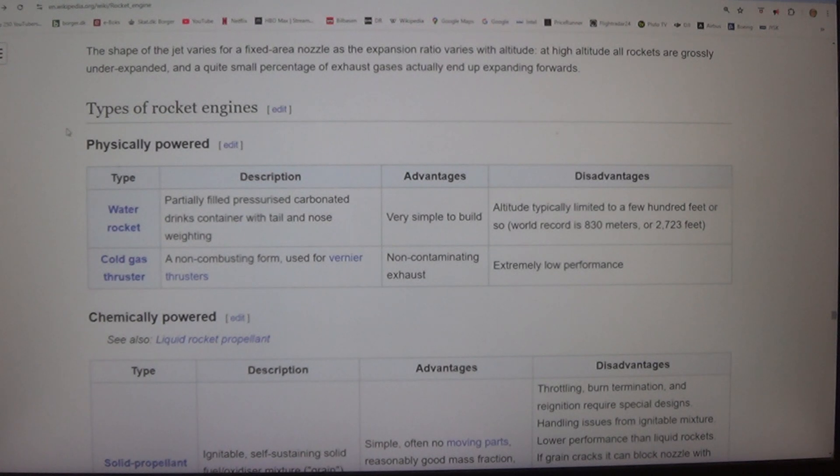Cold gas thruster - in non-combusting form, used for vernier thrusters. Non-contaminating exhaust. Extremely low performance.